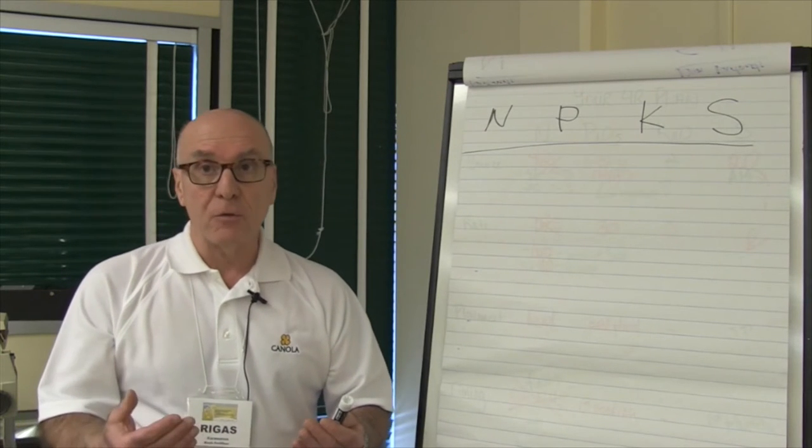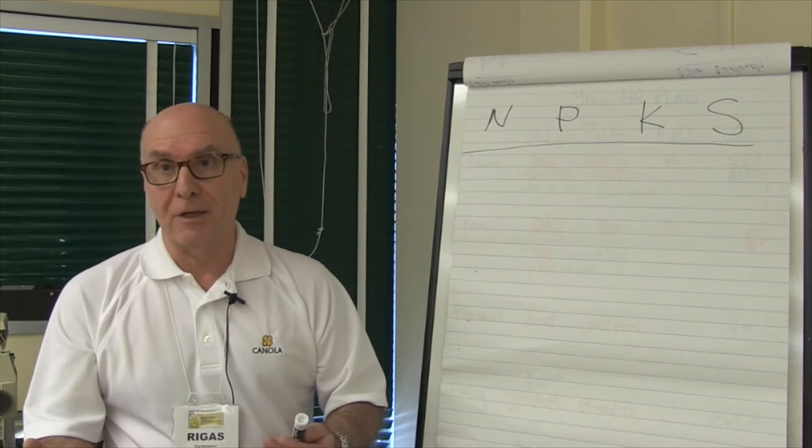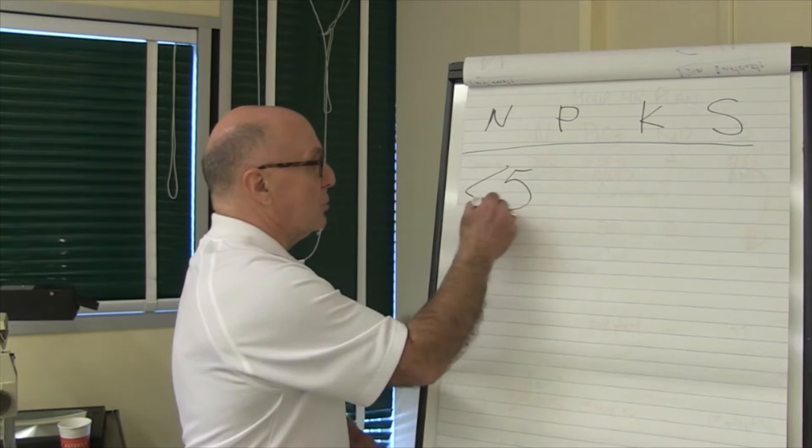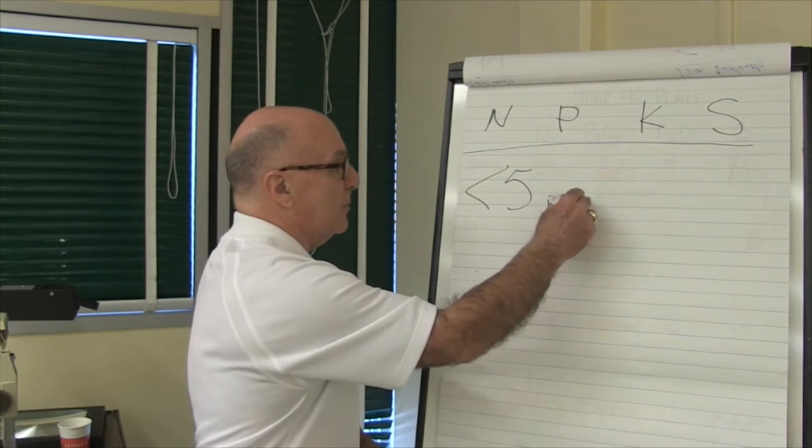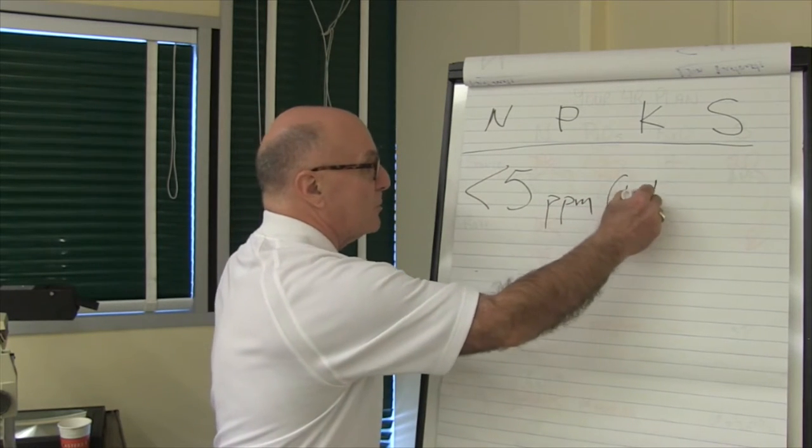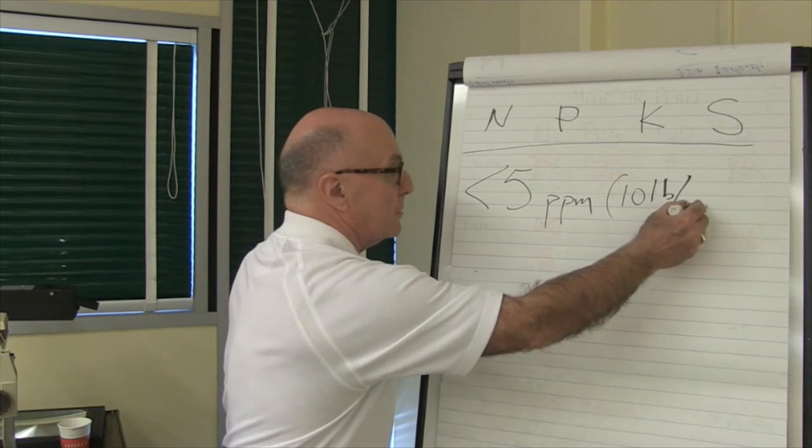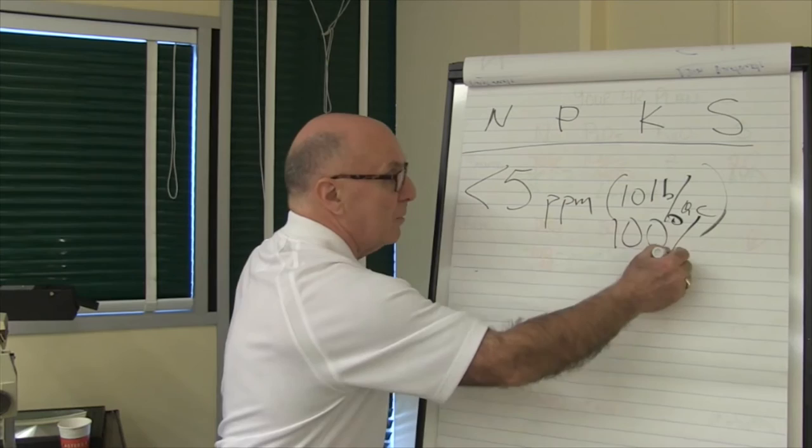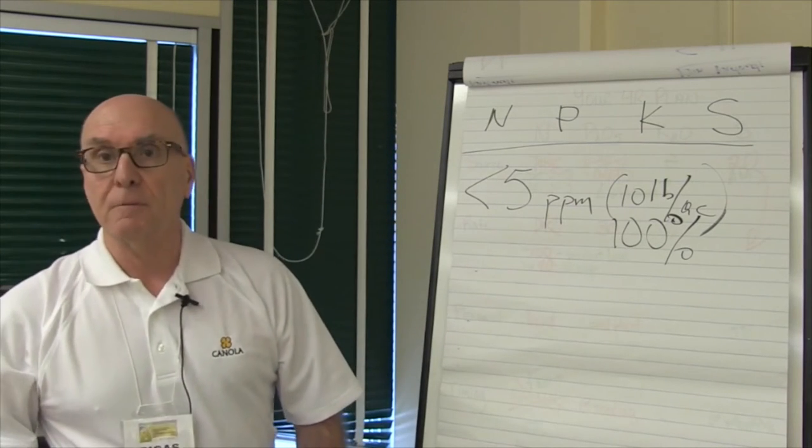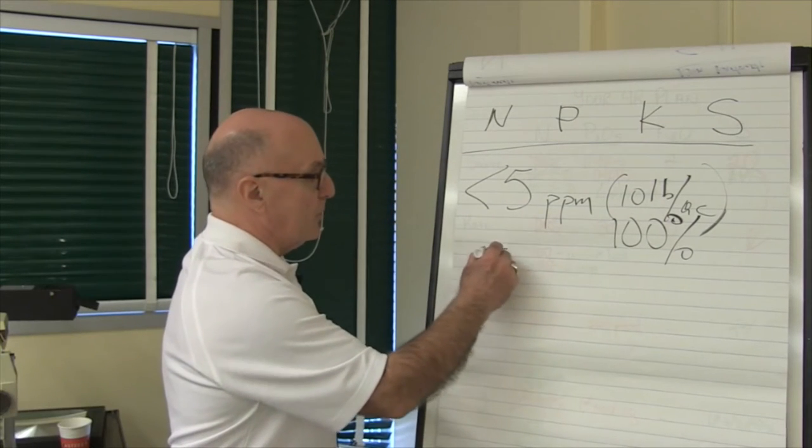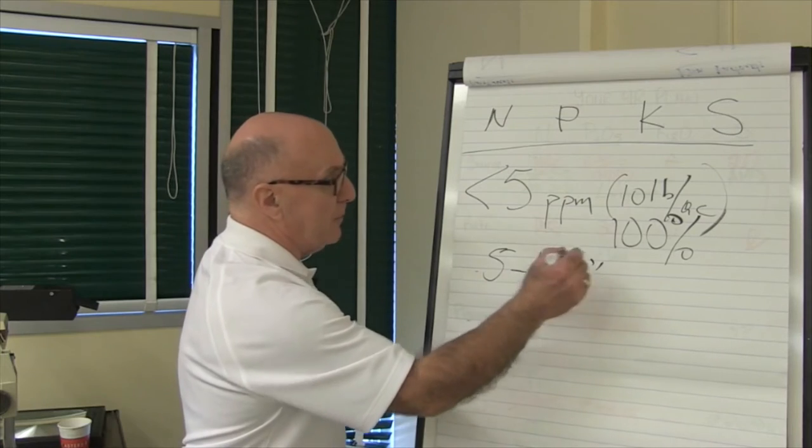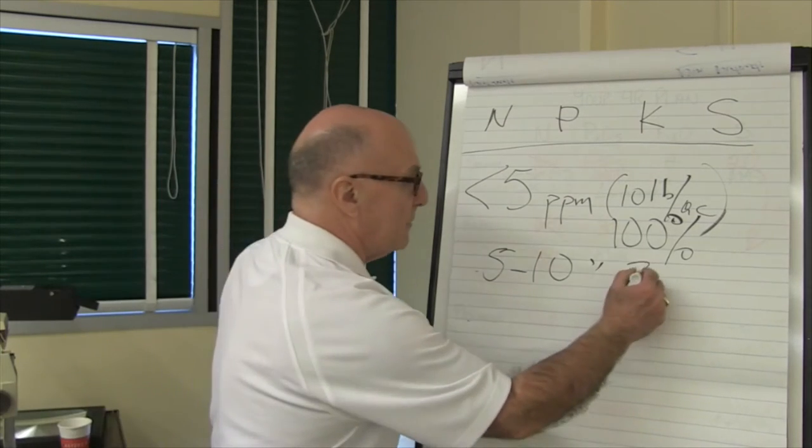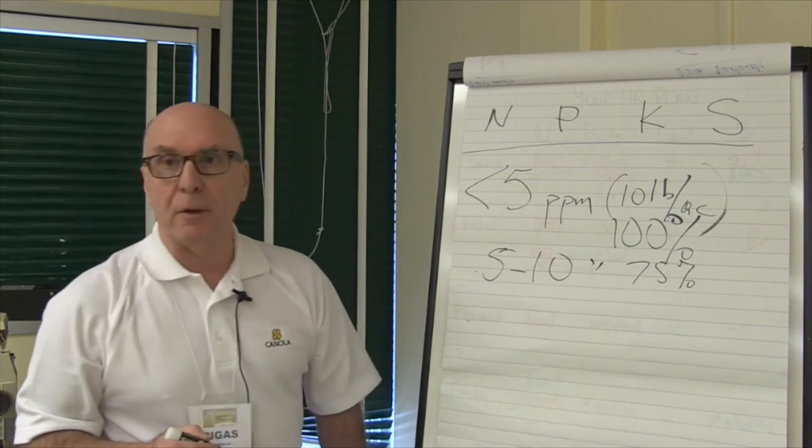When it comes to phosphorus, though, there are some generic things to look for. I would like to mark down: if your soil test is less than 5 parts per million, or if they're using pounds per acre, less than 10 pounds per acre, then you have 100% probability of getting a response. If your soil test is between 5 and 10 parts per million, that's 10 to 20 pounds per acre, you've got a 75% probability you're going to get a response.